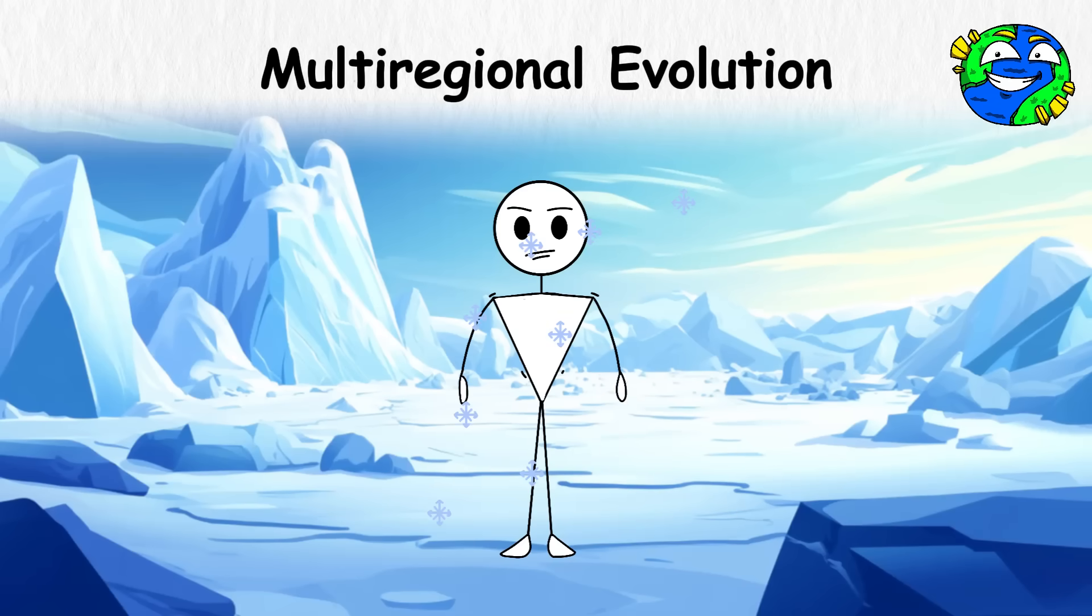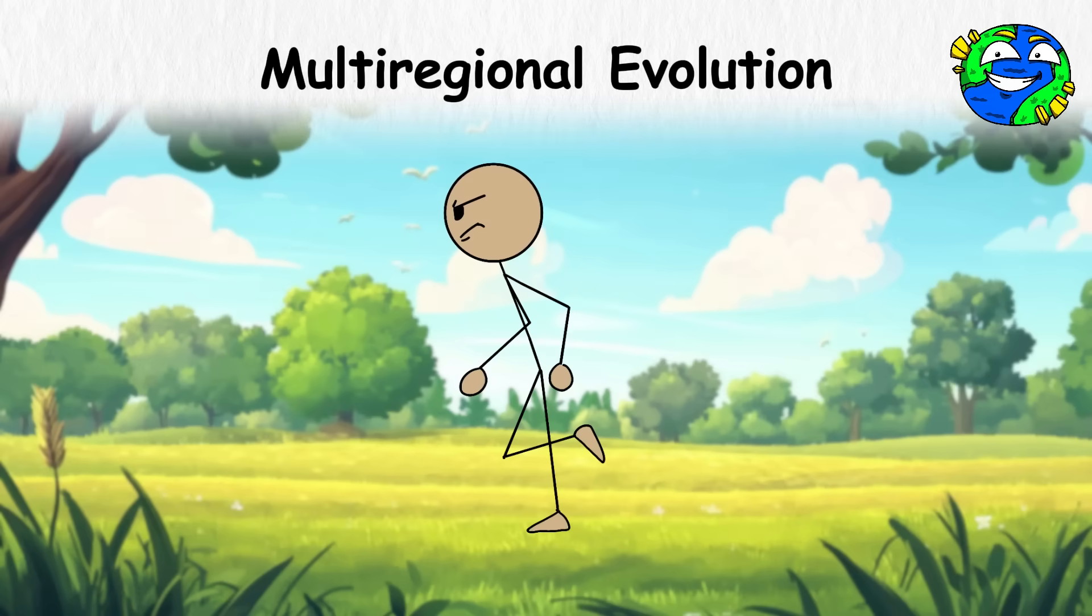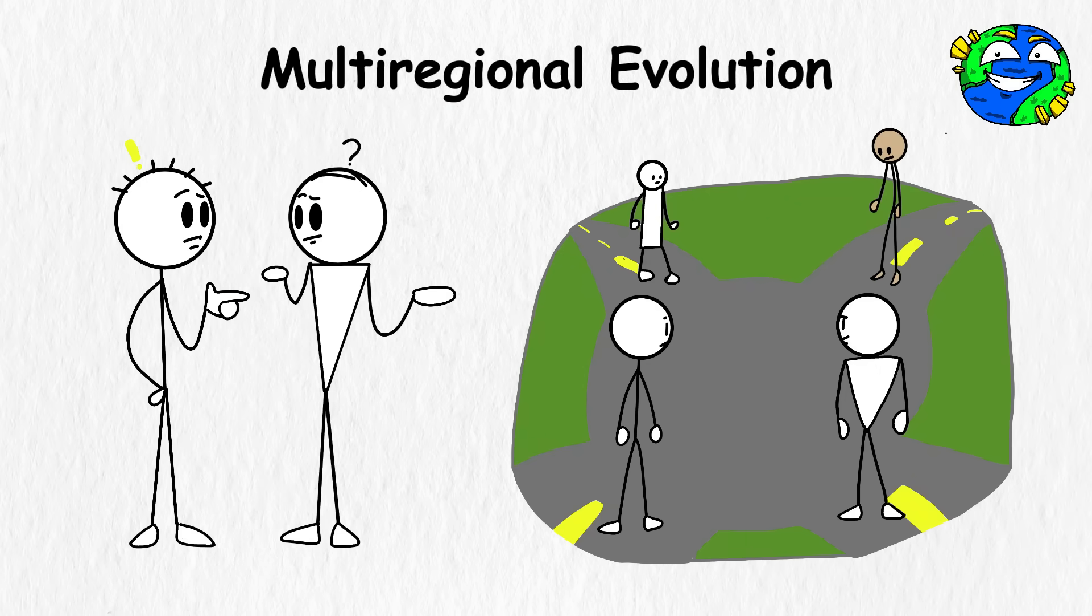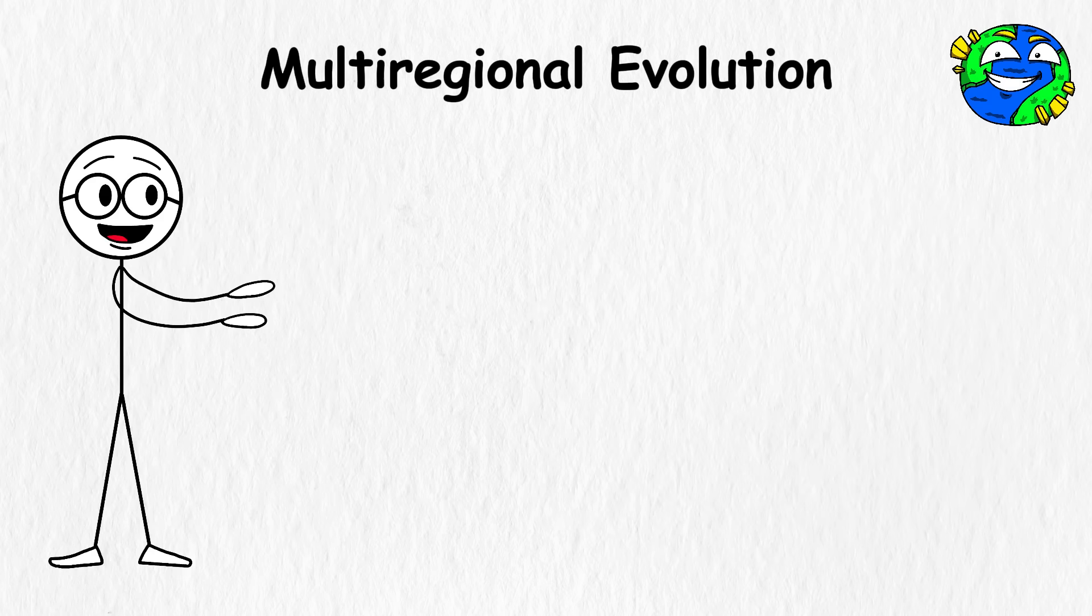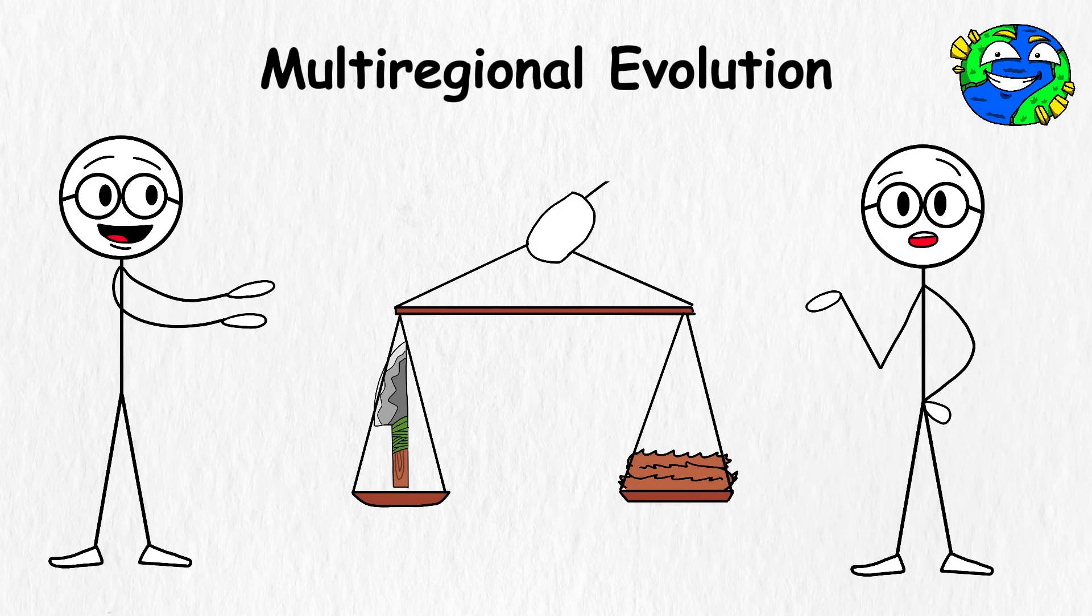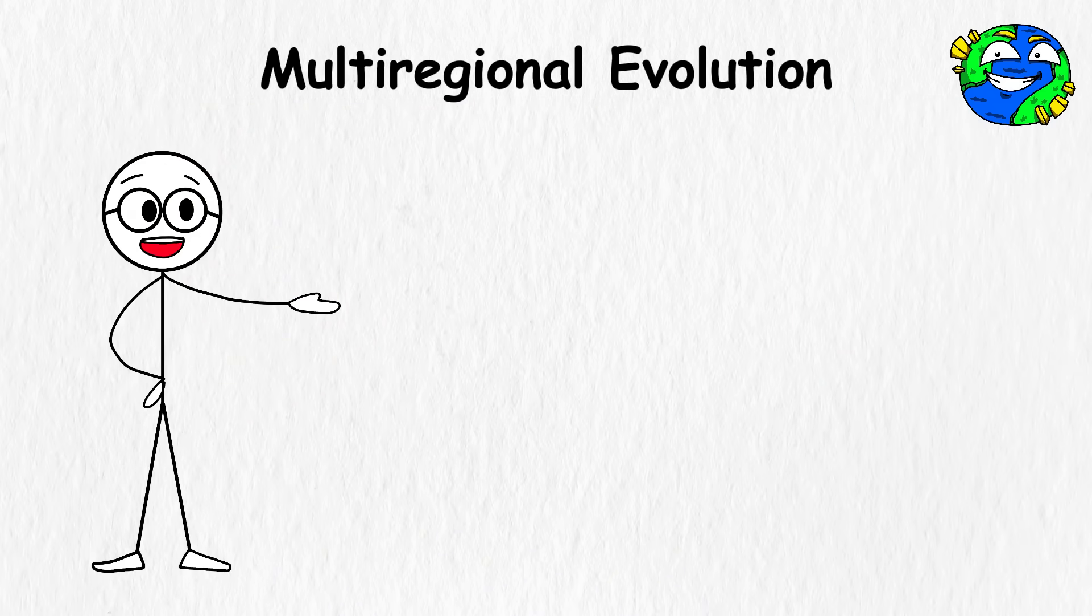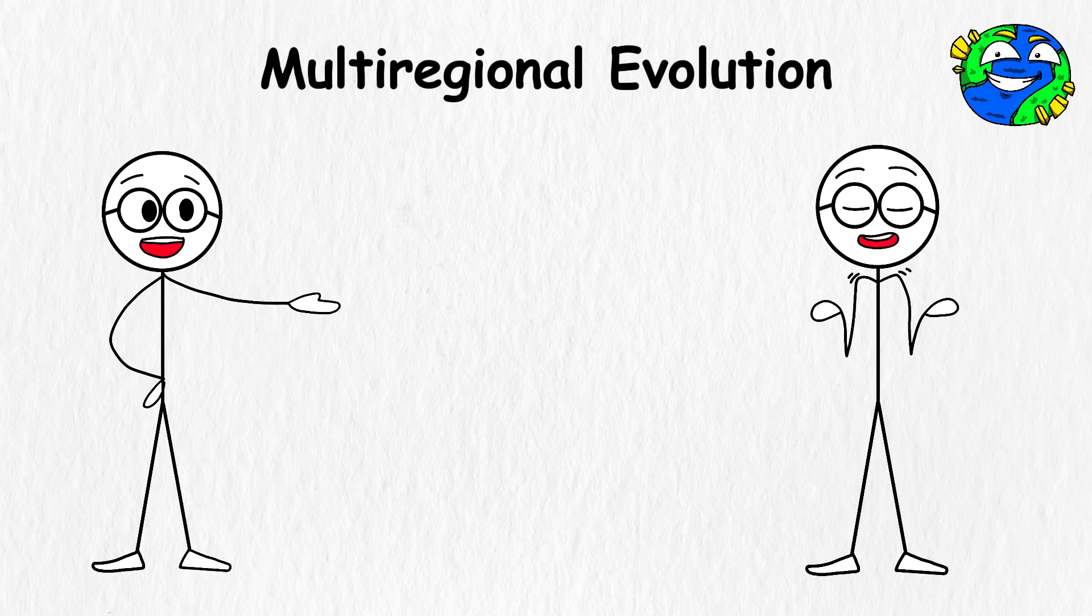One group got stockier to deal with the cold. Another got faster to chase food on open ground. They were all human relatives, just heading towards the same finish line from different roads. Eventually, they ran into each other again. Not just for trading tools, or tips on mammoth hunting. People started pairing up. Families formed. Genes mixed. And before long, everyone was part of the same group photo, whether they planned it or not.